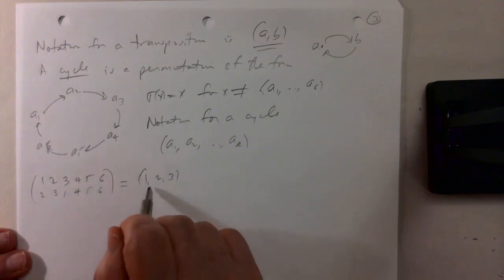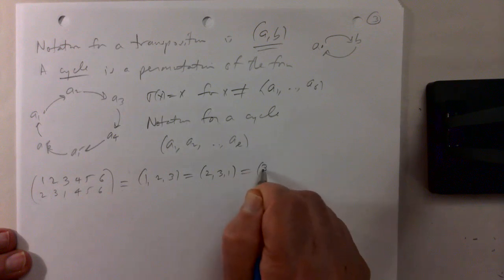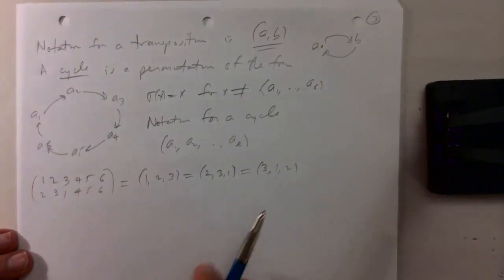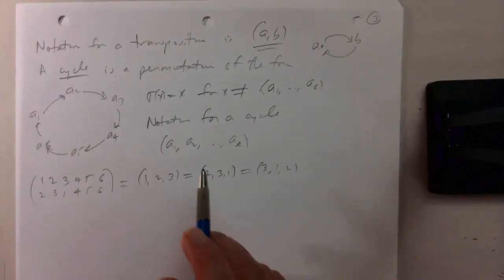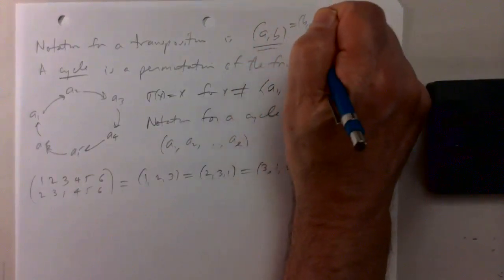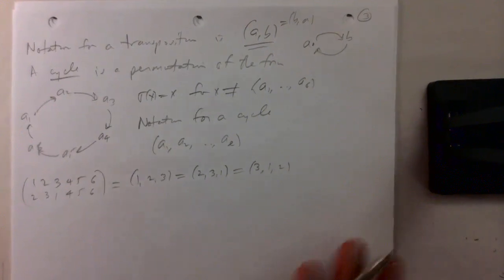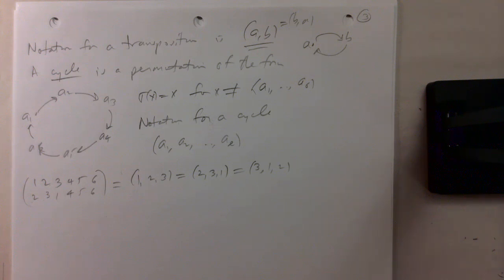Notice that the cycle (1, 2, 3) is the same as the cycle (2, 3, 1), because 2 goes to 3, 3 goes to 1, 1 goes to 2. So there's not a unique way to write a cycle — it's like a circle, and you can take any point as the starting point. Similarly, the transposition (a, b) is the same as the transposition (b, a). And what's very nice about cycles is they give a way to factor an arbitrary permutation.